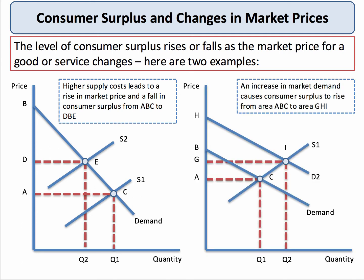What about the effect of a change in demand? In our second diagram on the right-hand side, we look at the effects of an outward shift in the demand curve from D to D2. That causes the quantity consumed to rise from Q1 to Q2. We move up the supply curve. The market price rises from OA to OG. At the original price, consumer surplus was the area A, B, C, because the price was A.